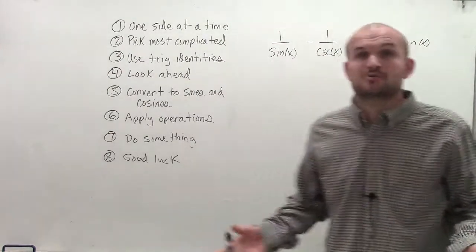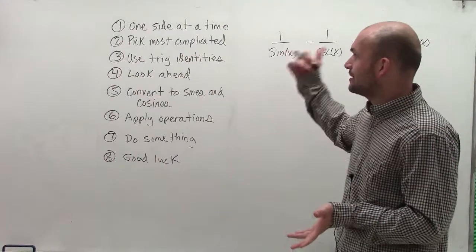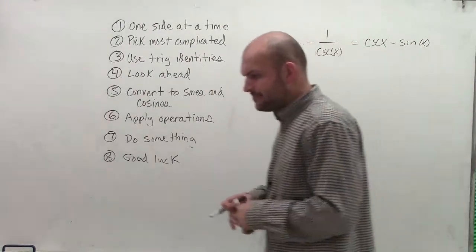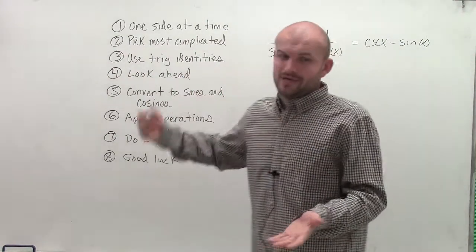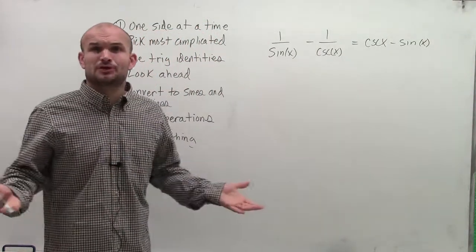And what we want to do is we want to verify that these two sides are exactly the same. So what we want to do is pick one side, pick the most complicated side. But the main important thing when I'm looking at this is it says use trig identities and look ahead. Right? So let's even try to see what identities do we currently have.